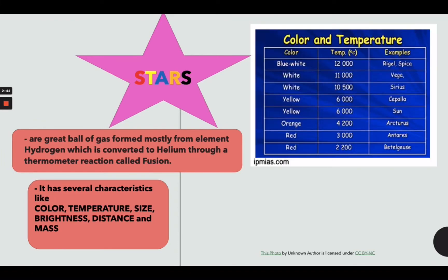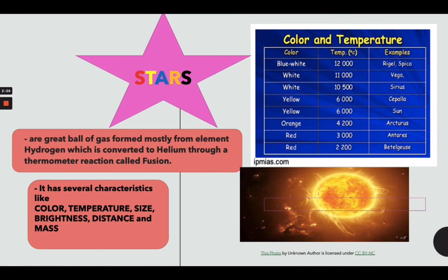What you can see on the right are sample color and temperature of different stars. As you notice, color blue-white is the hottest at 12,000 degrees Celsius, while our very own Sun is color yellow with a temperature of 6,000 degrees Celsius.